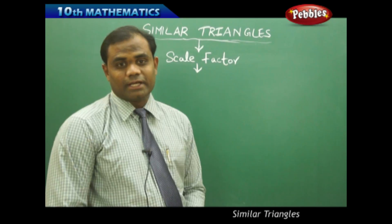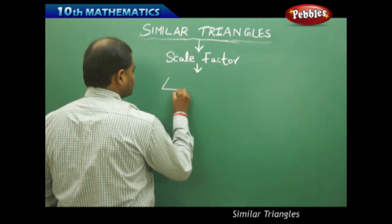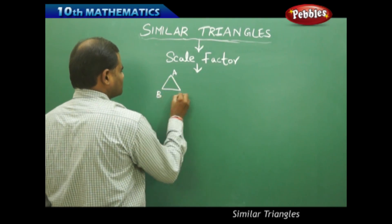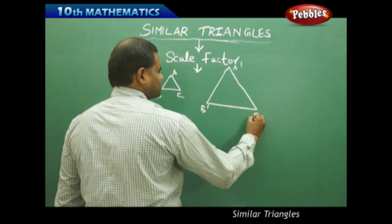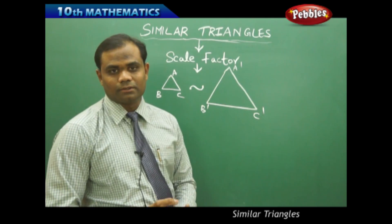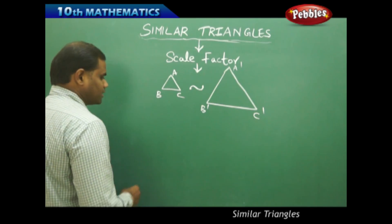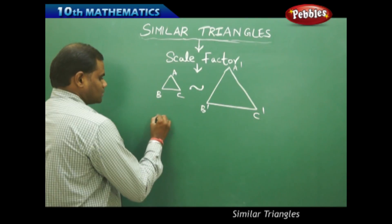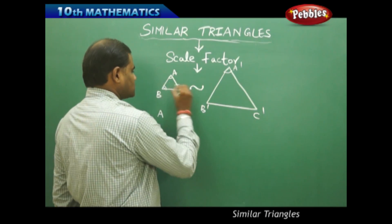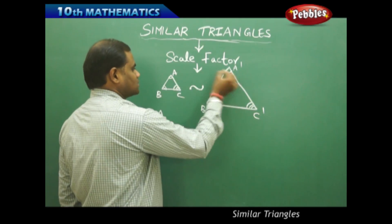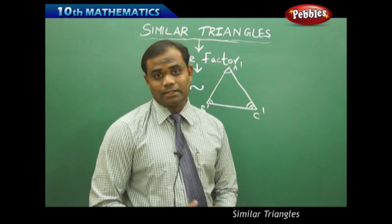Let's see the definition of scale factor through similarity of triangles. Consider two triangles ABC and A'B'C' assumed to be similar to each other — triangle ABC is similar to triangle A'B'C'. As we have seen, corresponding angles are equal for two similar triangles: angle A equals angle A', angle B equals angle B', and angle C equals angle C'. Therefore the corresponding angles are equal. Now coming to the second property of similarity: the corresponding sides are in the same ratio.